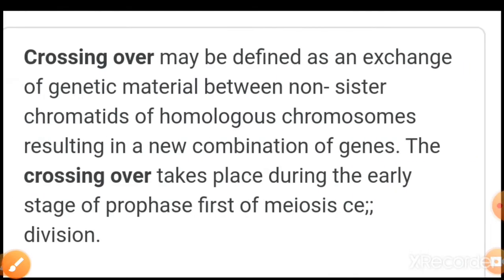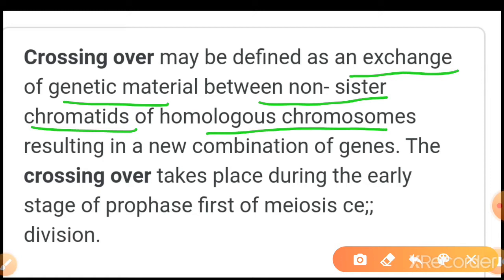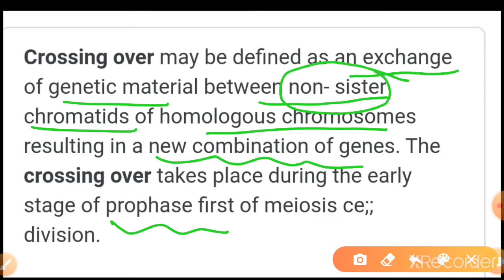Crossing over is defined as an exchange of genetic material between the non-sister chromatids of homologous chromosomes. This results in the new combination of genes. Crossing over takes place during the early stage of Prophase 1 of meiosis.